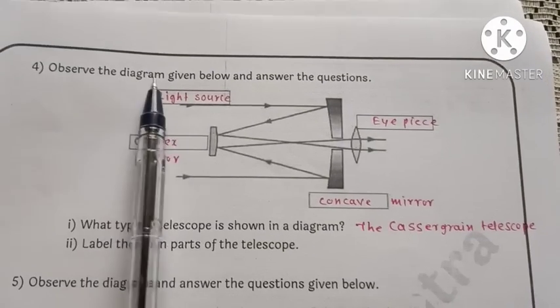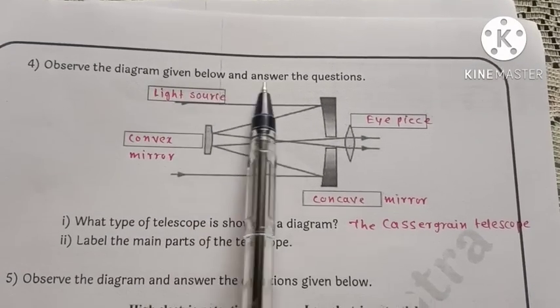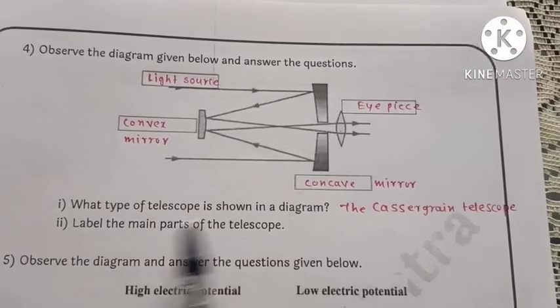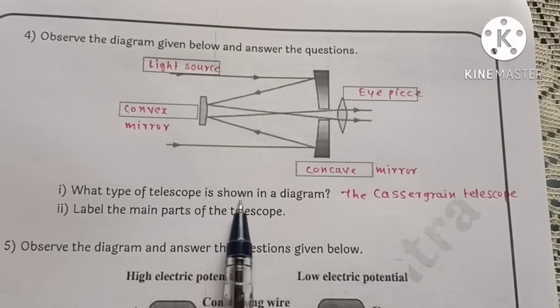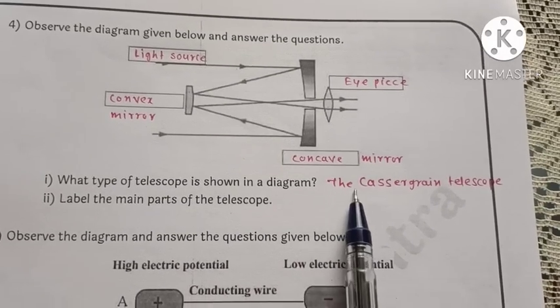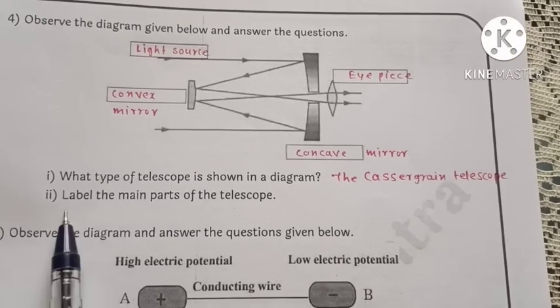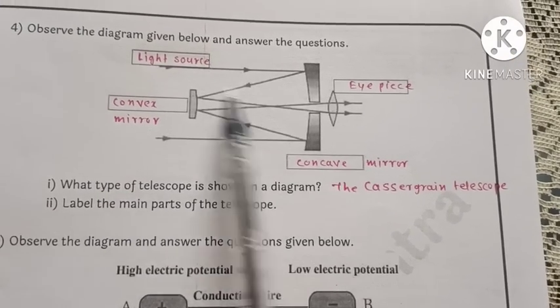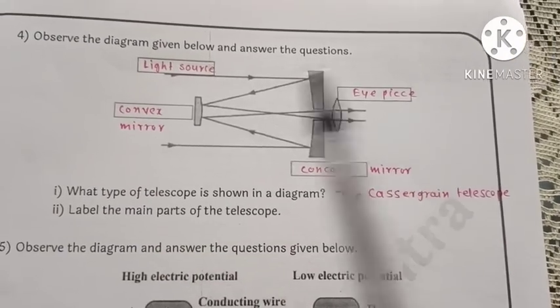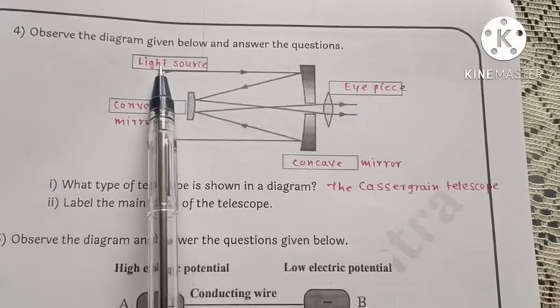Fourth sub-question: observe the diagram given below and answer the questions. First, what type of telescope is shown in the diagram? Answer is the Cassegrain telescope. Label the main parts of the telescope. In the figure, we have labeled: light source, lights, eyepiece, convex mirror, concave mirror.